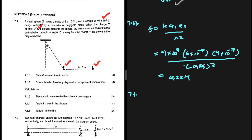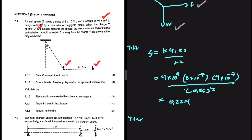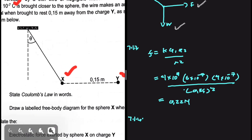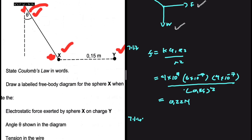Let's calculate the angle theta shown in the diagram. Our angle theta is between the y-axis and the tension. When the angle is between the x-axis and the tension, to find the x-component we use cos, and to find the y-component we use sin. But when the angle is between the y-axis and the tension, it is the other way around — for x we use sin, and for y we use cos. That is something to think about.